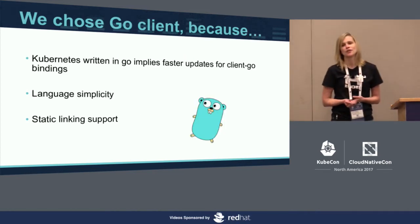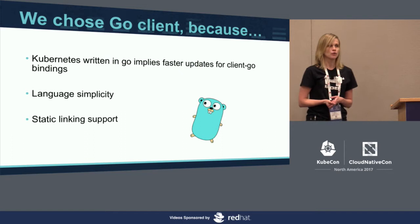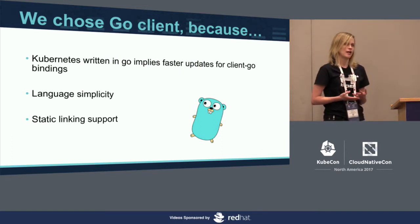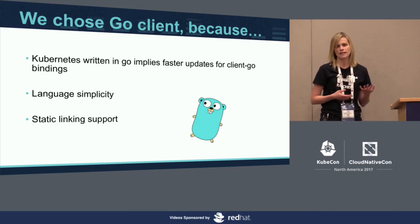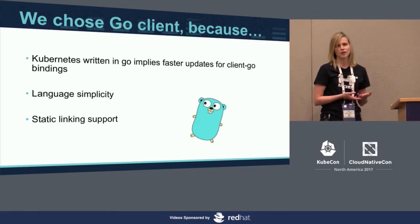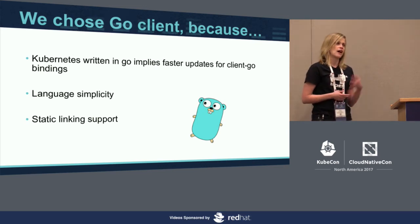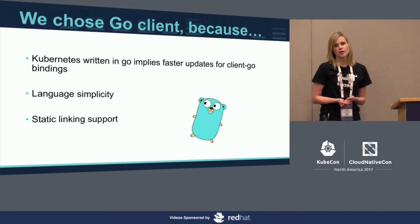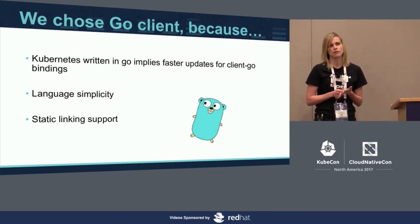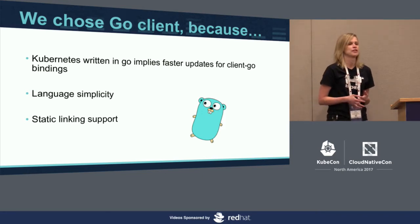Why would I recommend using the Go client as opposed to any other language? Kubernetes is written in Go, and I always find it's better to develop the client in the language in which the main component is written. It implies faster updates — if Kubernetes gets updated, client-go gets updates almost immediately. Go is pretty simple and easy to use, and very easy to use for applications meant to be deployed in containers. That's something we are going to do today.